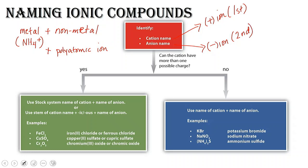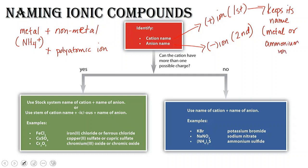So let's figure out how we're going to name the atom. The cation keeps its name. And remember, this is going to either be the metal or the ammonium ion, and it's going to keep its name.